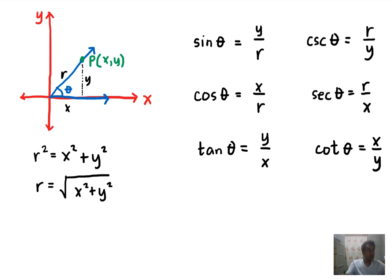These are the six trigonometric ratios based from the values of x, y, and r. We can see from the formulas that sine of theta and cosecant of theta are reciprocals of each other, since sine is y over r and cosecant is r over y. The same is true with cosine and secant, and also with tangent and cotangent. We will illustrate these formulas in the next example.